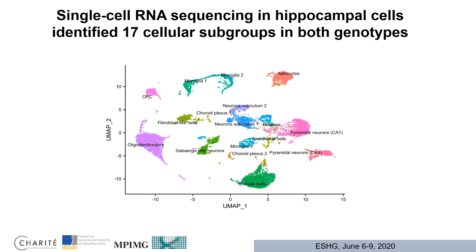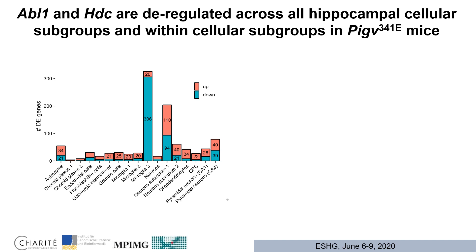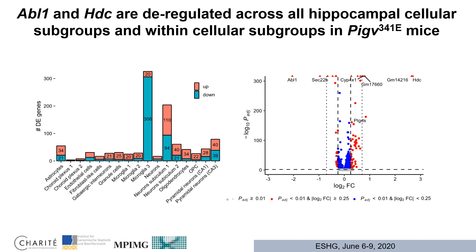To understand which cell types within the hippocampus are most affected by the GPI-Anchor defect, we performed single-cell RNA sequencing, identifying 17 cellular subgroups in both genotypes within the hippocampus. We observed the highest number of differentially expressed genes in microglia 3, neuron subiculum 1, and pyramidal neurons of the CA3 region. Remarkably, ABL1 and HDC were consistently deregulated across all cellular subgroups within the hippocampus. ABL1, encoding a non-receptor tyrosine kinase, showed decreased expression, while HDC, encoding histidine decarboxylase important for histamine synthesis, showed increased expression.